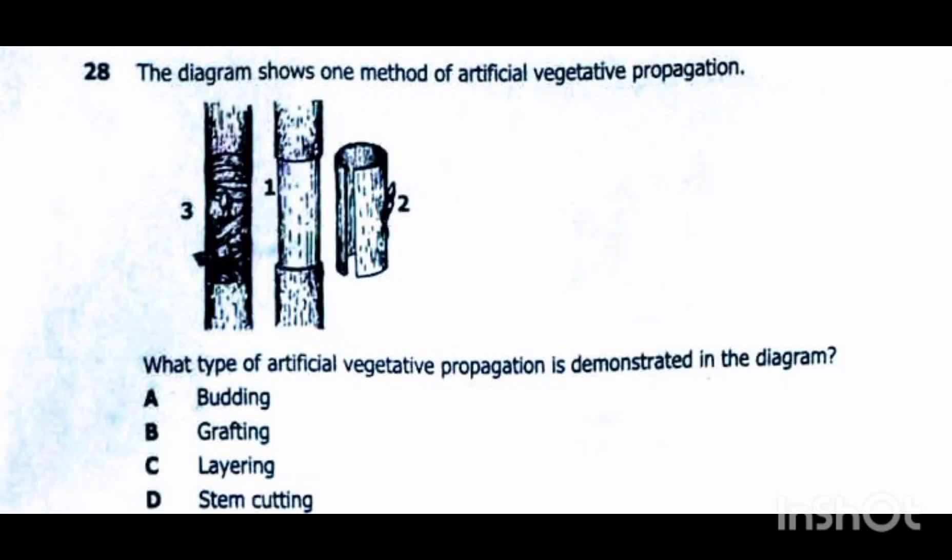Let's look at question number 28. The diagram shows one method of artificial vegetative propagation. What type of artificial vegetative propagation is demonstrated in the diagram?